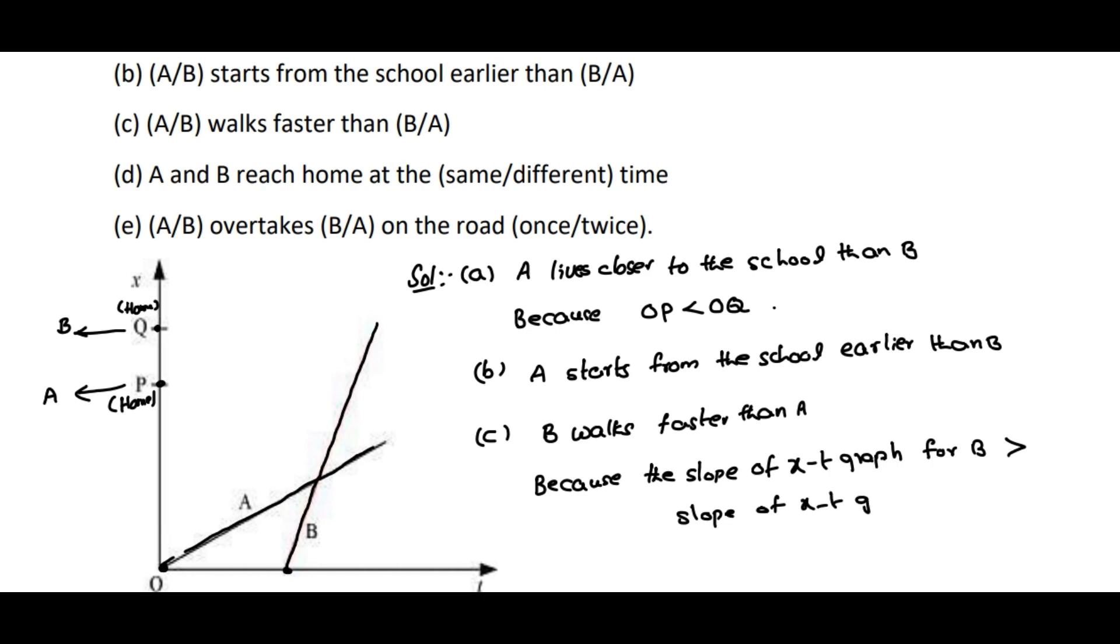From the x-t graph, the slope gives us speed. So B is moving faster. That means the speed of B is more than the speed of A.